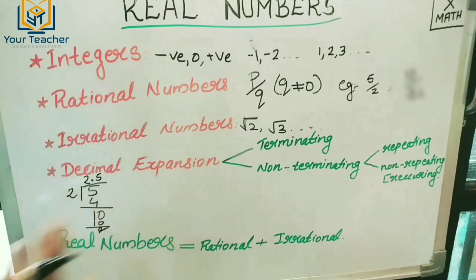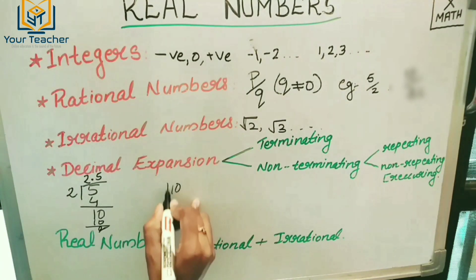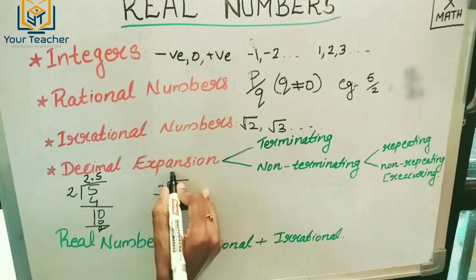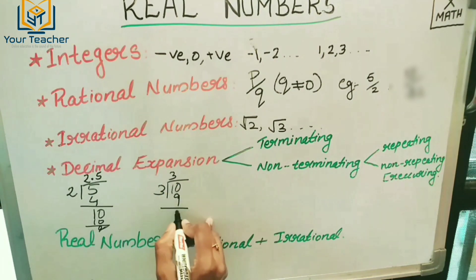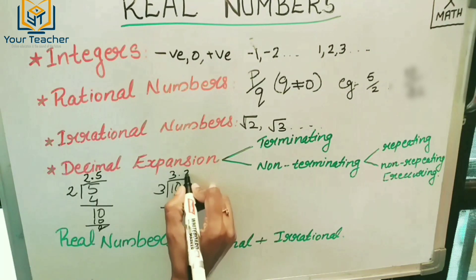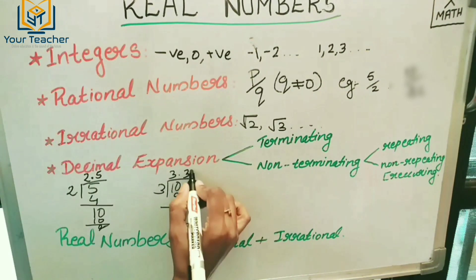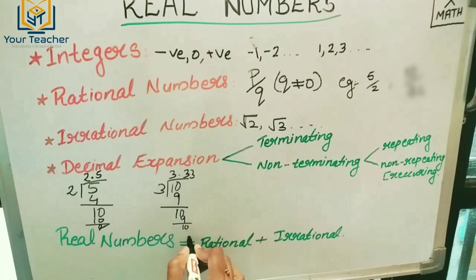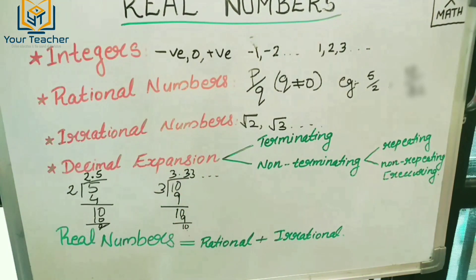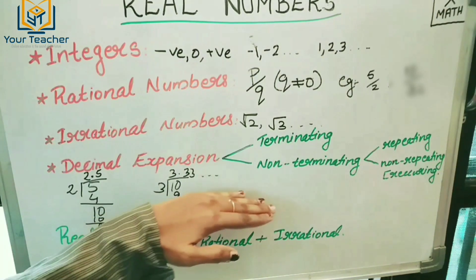This is not done. For example, 10 divided by 3: 3 threes are 9, remainder 1. Put decimal here. 10 again — 3 threes are 9, remainder 1 again. Then 3 again. That means it never ends.